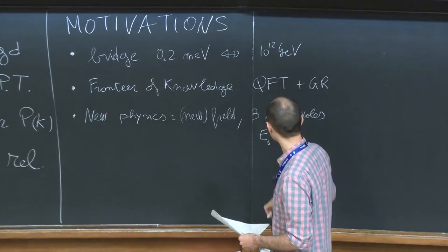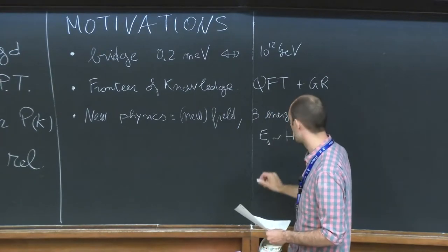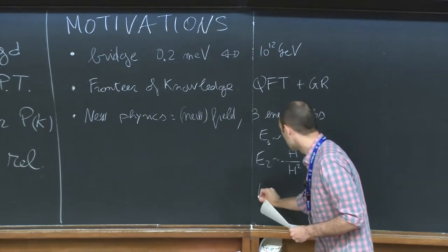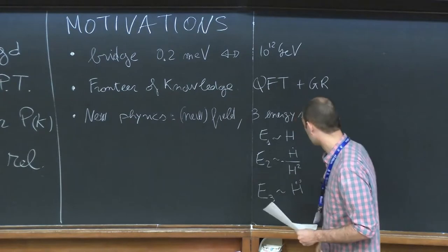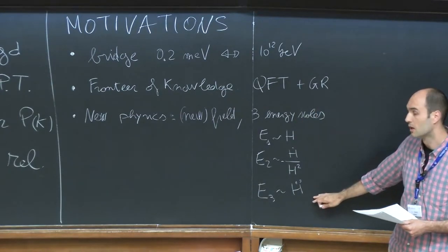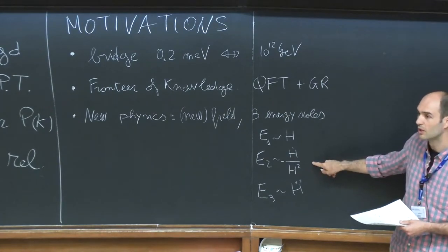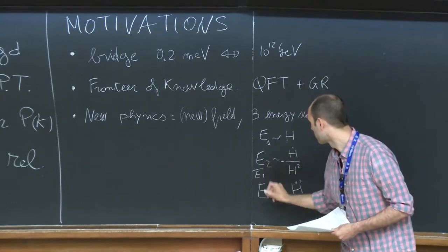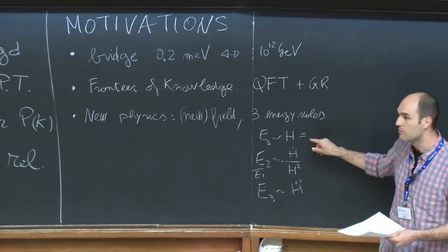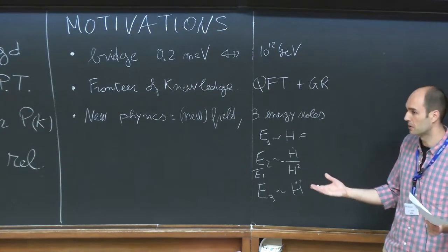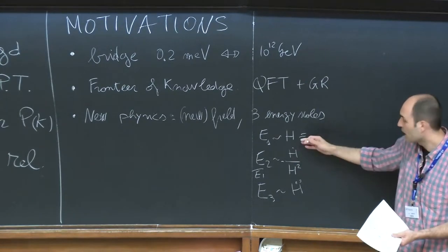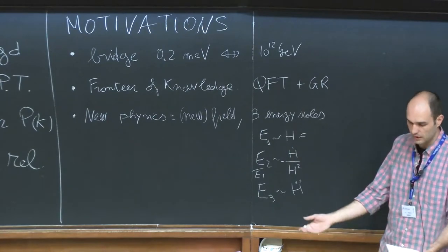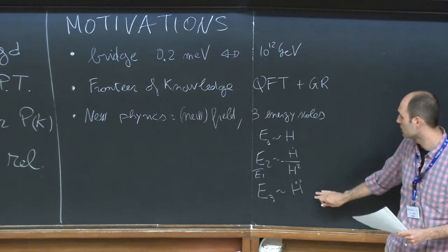There are three mass scales. There is an energy scale E1, related to the Hubble constant during inflation. Another one, E2, related to the fact that this Hubble constant cannot be constant — it has to change, otherwise inflation doesn't end. And then there is a third one, which has to do with the second derivatives of this quantity. I'll show you that we have actually measured each one of them separately. We need at least three new energy scales. If you try to make them come from any standard model scale, you just don't see it appearing, so you need some other way to generate these scales in physics.